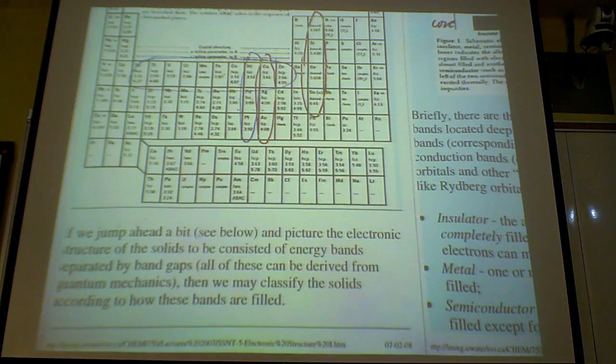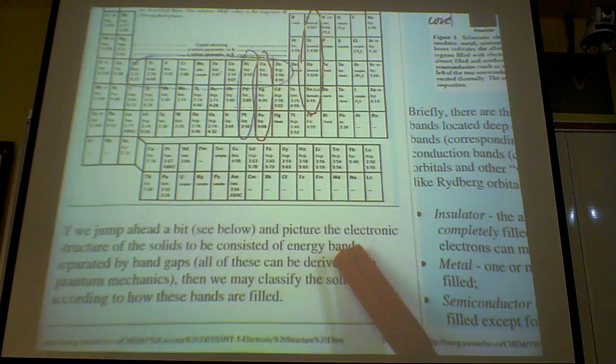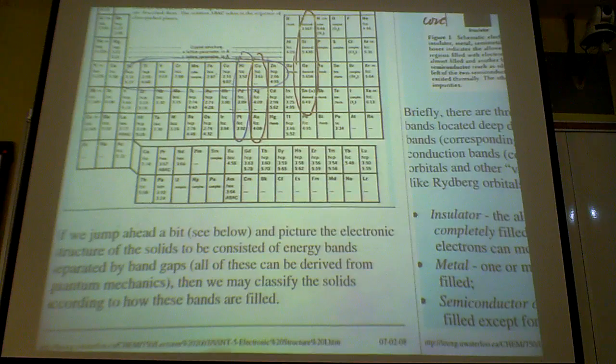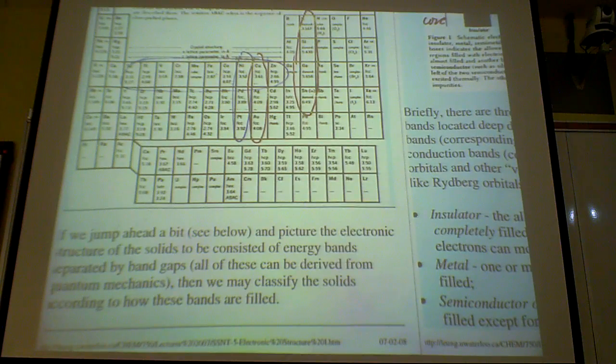So you can picture these to consist of electronic bands separated by band gaps, and all of these can be derived by quantum mechanics. We'll talk a little briefly about this just to give you a bit of mathematical background that you can derive all these things from quantum mechanics.